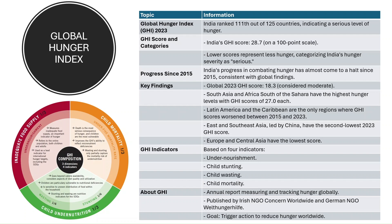In the Global Hunger Index 2023, India ranked 111 out of 125 countries, indicating a severe level of hunger. The index is based on four indicators: undernourishment, child stunting, child wasting, and child mortality.